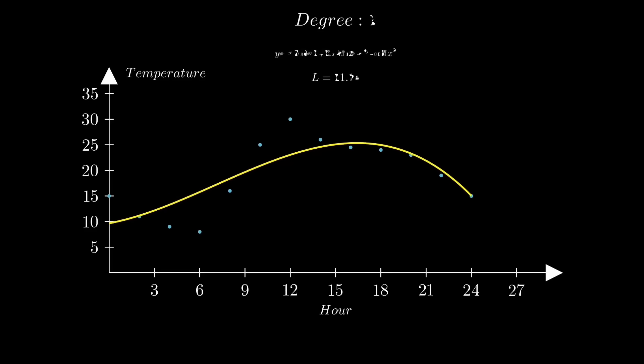We can complicate the model by using a cubic polynomial. It fits the ups and downs quite well. But what if we increase the degree?